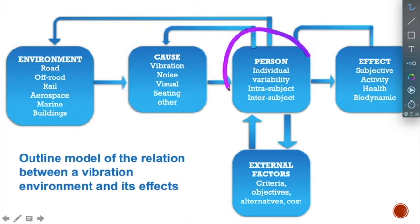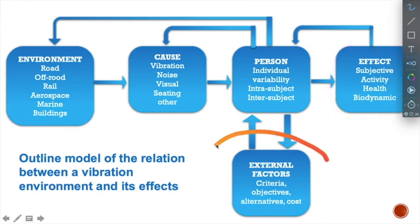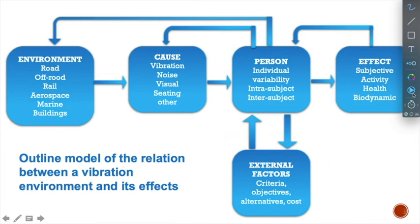Individual factors affect how a person responds — those with better control of their cognitive and vascular systems may not suffer motion sickness, while those with lesser control might. Effects may be subjective, activity-related (writing affected, visual activity affected), or health-related (vomiting, low back pain). External factors include the objective of the task — whether it requires very high concentration or not. This is how vibration is related to its environment and to humans.